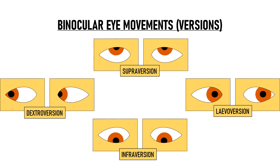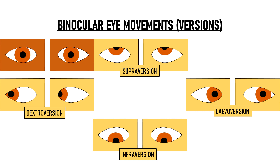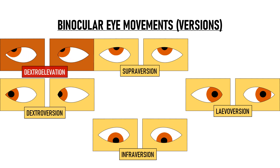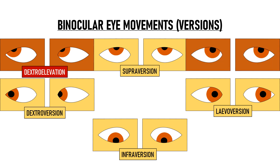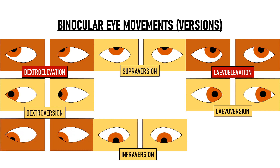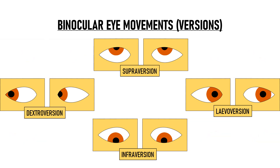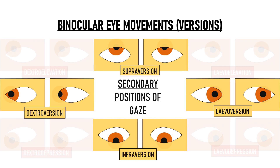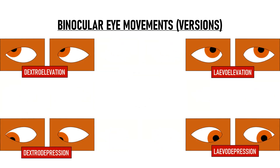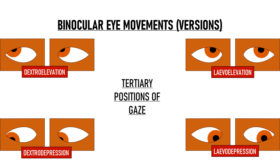When the eyes move obliquely, they can move into four different gazes. Up and to the right is dextro elevation, up and to the left is levo elevation, down and to the right is dextro depression, and down and to the left is levo depression. Dextroversion, levoversion, supraversion, and infraversion are secondary positions of gaze, while dextro elevation, dextro depression, levo elevation, and levo depression are tertiary positions of gaze.